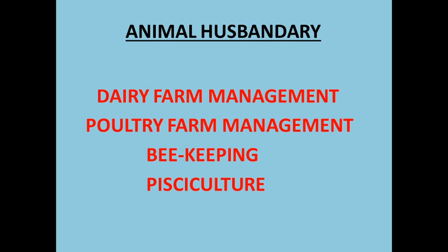So the definition of animal husbandry is: the process of rearing and management of various livestock or various animals for the production of different products for human welfare. The main important types of animal husbandry are dairy farm management, poultry farm management, beekeeping, and pisciculture.